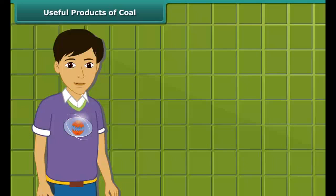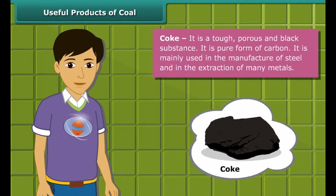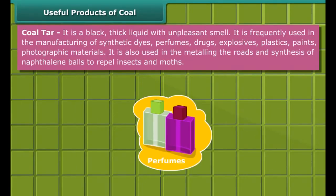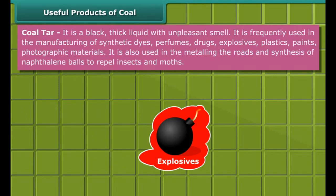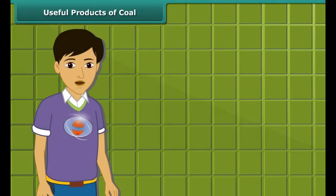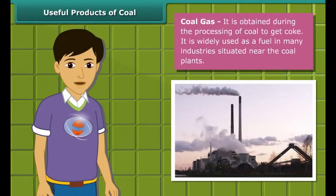Do you know how these byproducts are helpful for us? First, let us know about coke. Coke is a tough, porous, and black-colored substance mainly used in the manufacturing of steel and extraction of many metals. Coal tar is a black, thick liquid with an unpleasant smell, frequently used for manufacturing of synthetic dyes, perfumes, drugs, explosives, paints, plastics, and photographic materials. Coal gas is produced when obtaining coke from coal, and is used as a fuel in many industries located near coal plants.